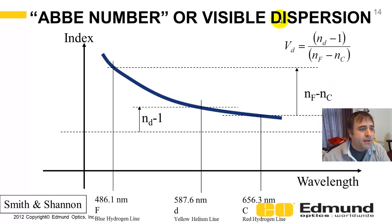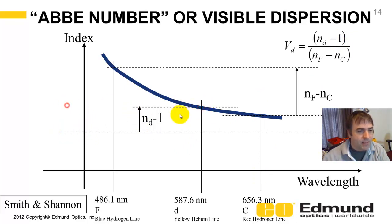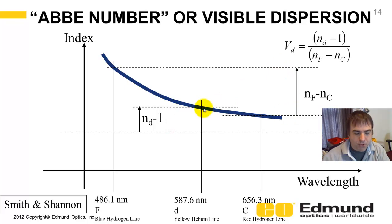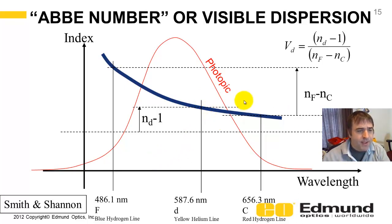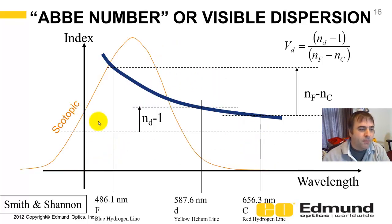Here's a qualitative plot of the Abbe number showing index of refraction on the vertical axis versus wavelength on the horizontal — blue (486 nm), green (587 nm), to red (656 nm). The index at D light minus 1, divided by the difference from blue to red index, is essentially a bias term divided by a slope — that's really what dispersion is. Overlaying the photopic curve, which your cones measure for color, you can see that 486 to 656 nm represents it well. The scotopic curve, measured by your rods, shifts more into the blue for nighttime vision.